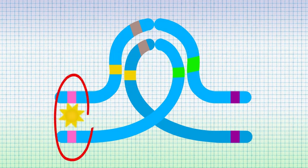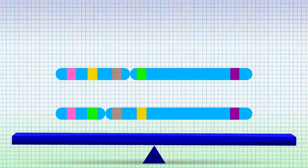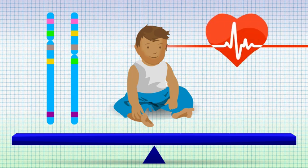If a crossover occurs on either side of the loop, then the chromosomal products will be balanced and the baby will be healthy, although 50% will carry the inversion.